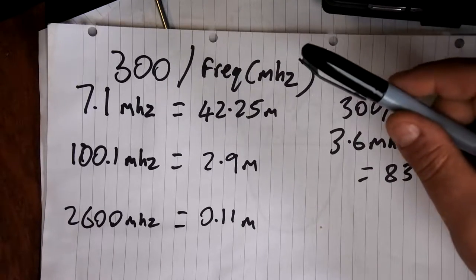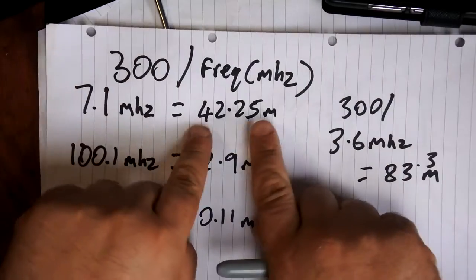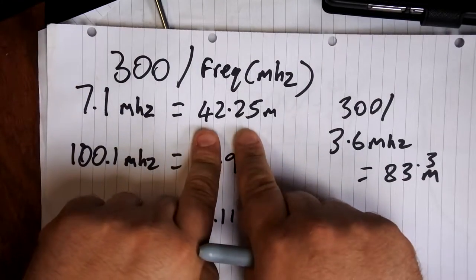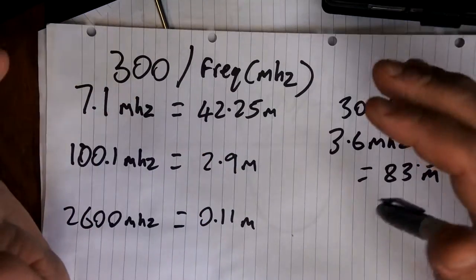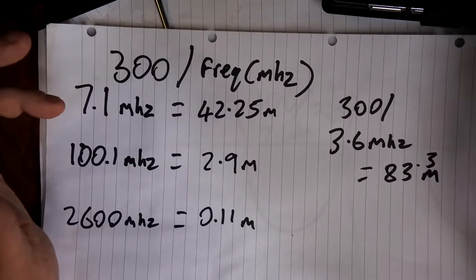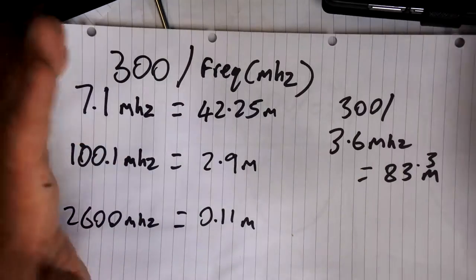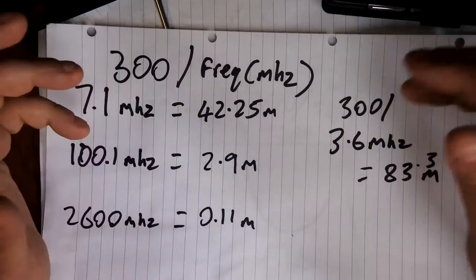And so what you want is, ideally, an antenna that is the correct length. Now, it doesn't actually have to be this. It can actually be half of this, quarter of this, or one third of this, because such is the way of radio, and you can look this up yourself. As long as you've got a length where the signal will eventually dissipate nicely.